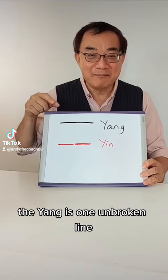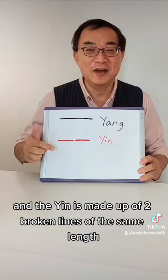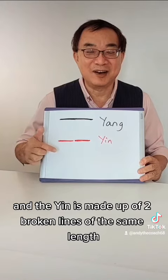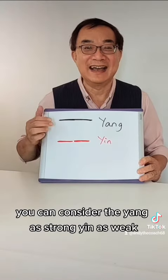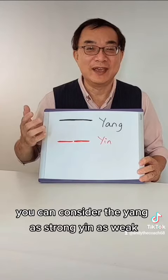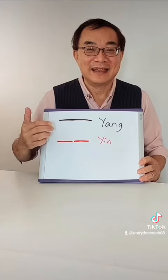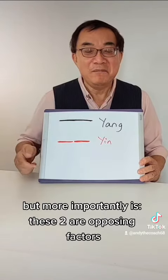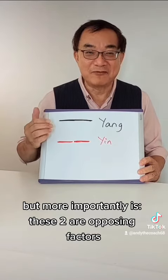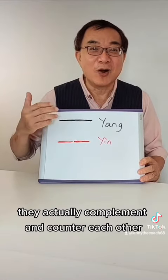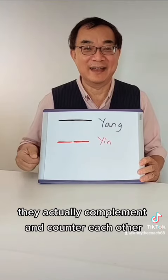The I Ching is made up of two most important concepts. Yang is one unbroken line, and Yin is made up of two broken lines of the same length. You can consider Yang as strong, Yin as weak, Yang as hard, Yin as soft. But more importantly, these two are opposing factors — they actually complement and counter each other.